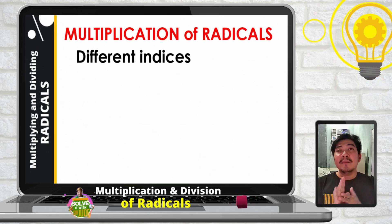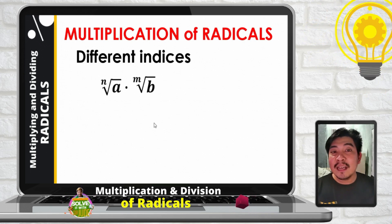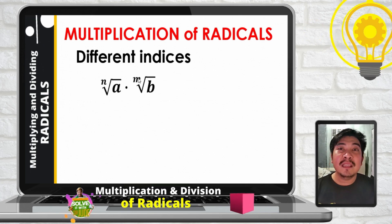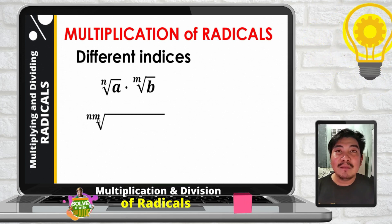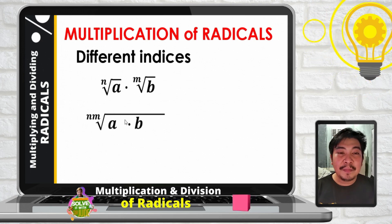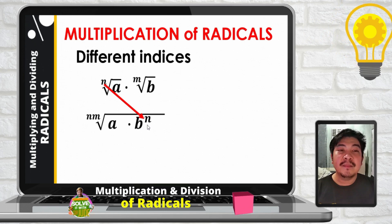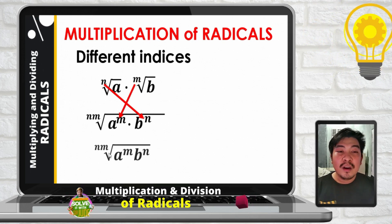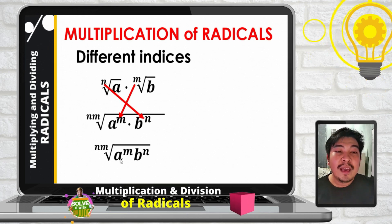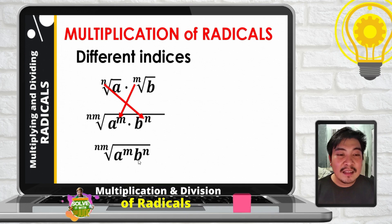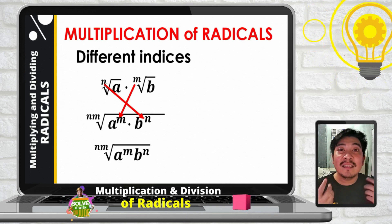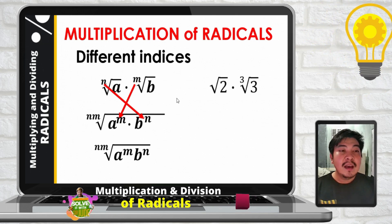Now, how about multiplying radical expressions with different indices? The rule is: n-th root of a times the m-th root of b. Since the indices are different, we multiply the indices — n times m — to get the new index. Then for the radicands, the index of the first radical becomes the exponent of the second radicand, and the index of the second radical becomes the exponent of the first radicand. So the law gives us the nm-th root of a raised to m times b raised to n.